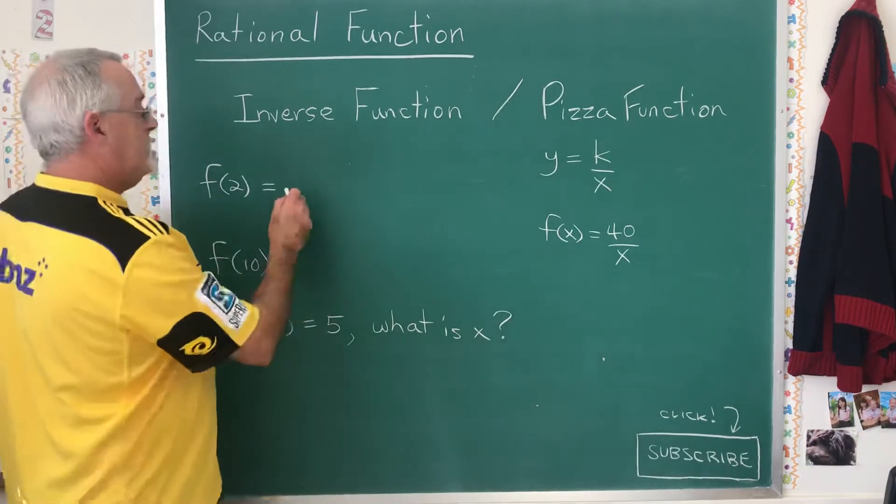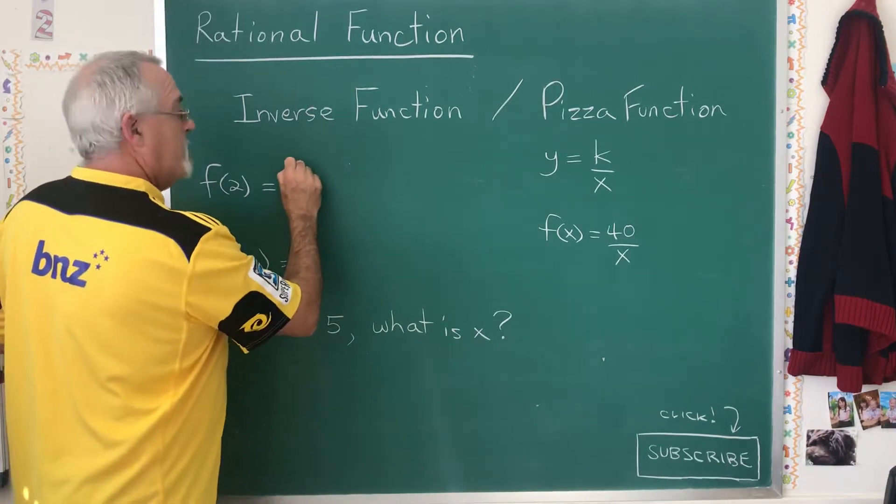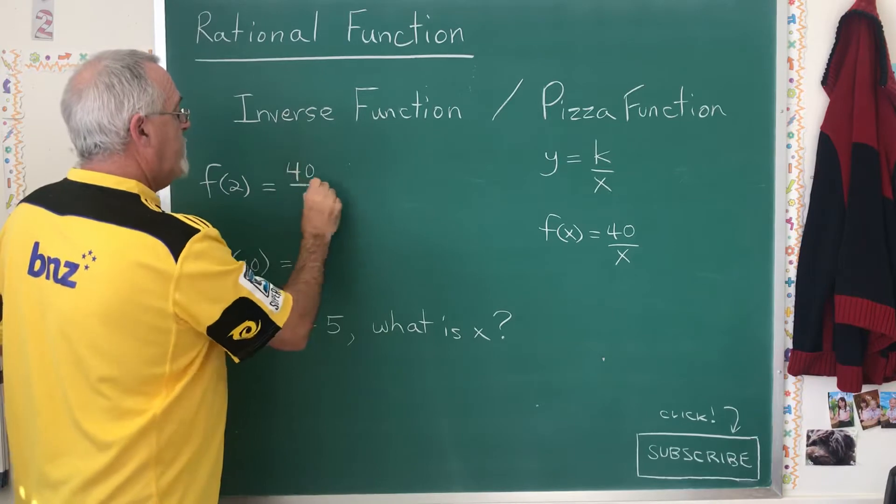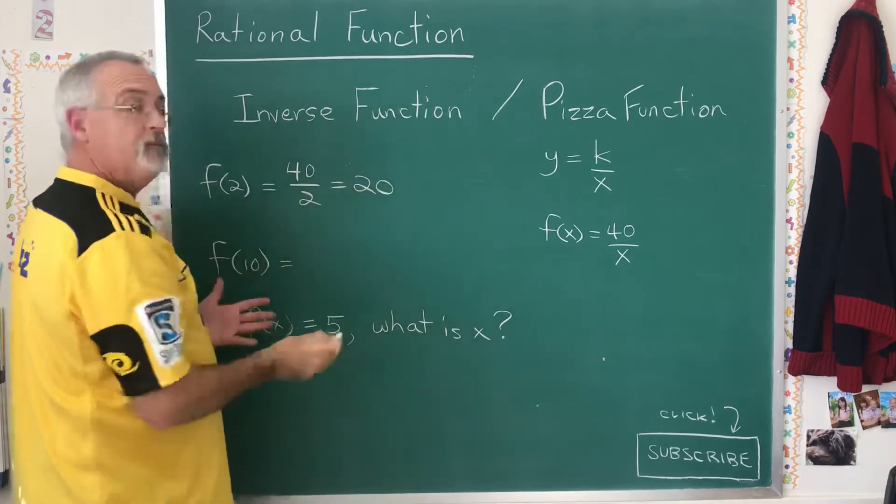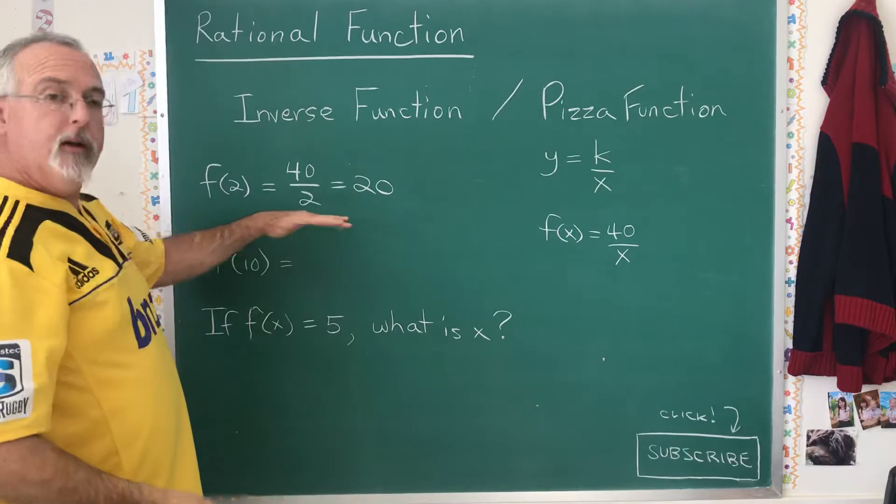So therefore, f of 2 means, in this case, 40 over 2, which is 20. That's not so difficult to get used to.